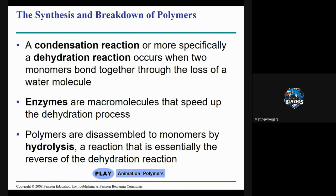Enzymes are proteins that accelerate processes, making them happen faster. There are enzymes that speed up the connection process, and there are also enzymes that speed up hydrolysis. Once we build a polymer, we can break it back down into monomers through hydrolysis — hydro meaning water, lysis meaning to break apart. So we use water to break apart polymers. Dehydration reaction takes away water to make things stick together; hydrolysis adds water to break things apart.